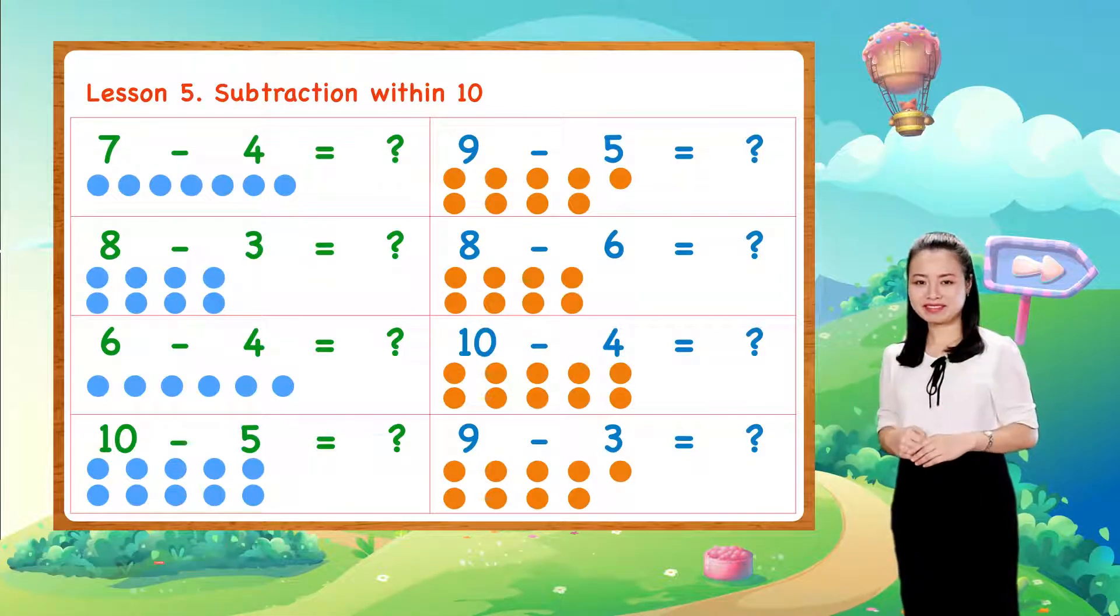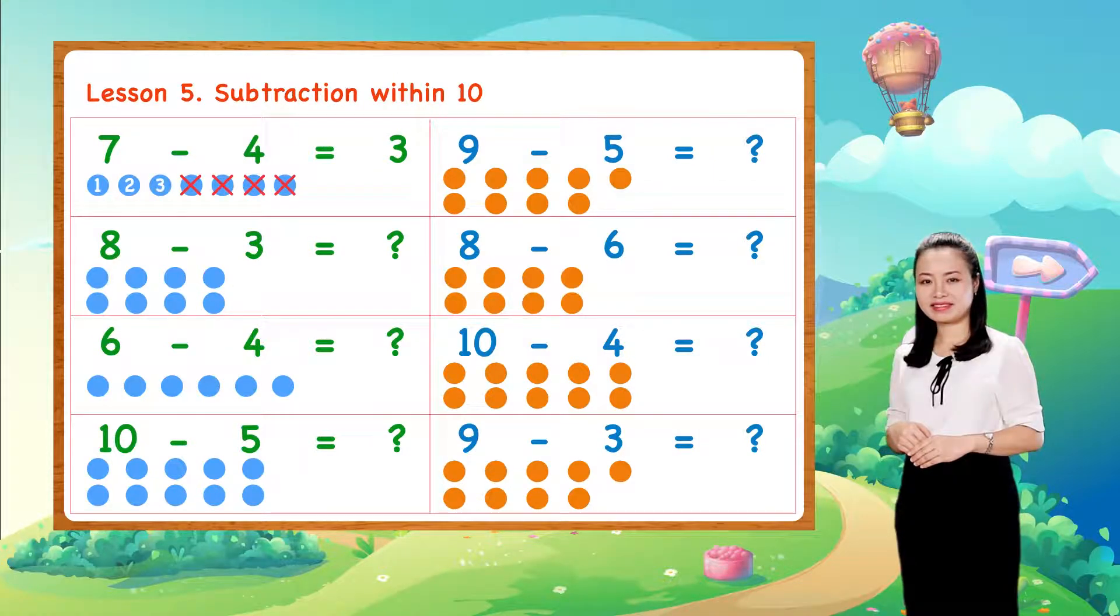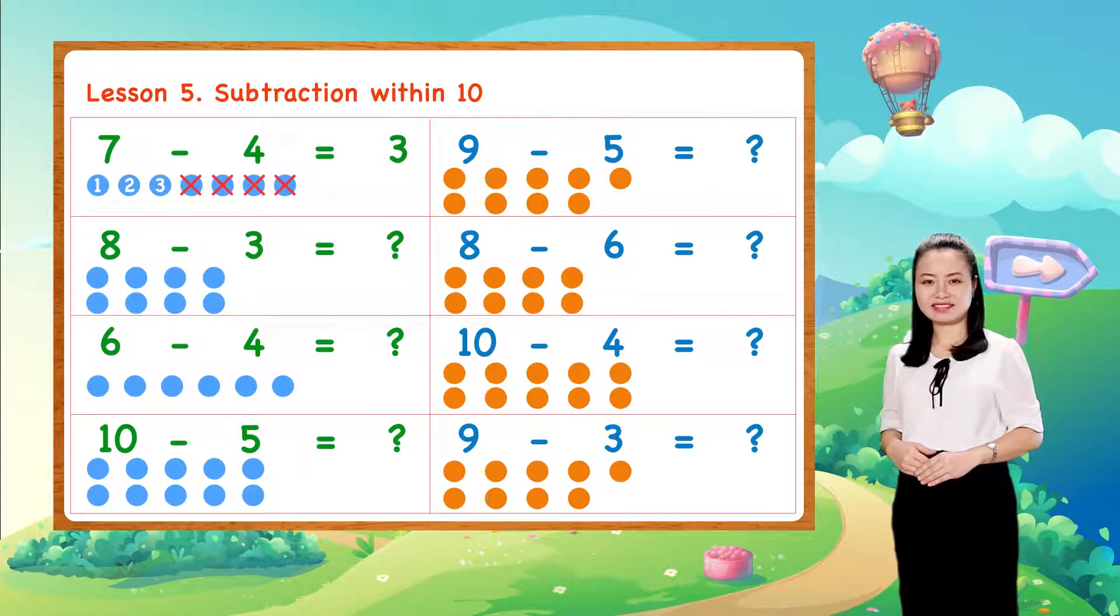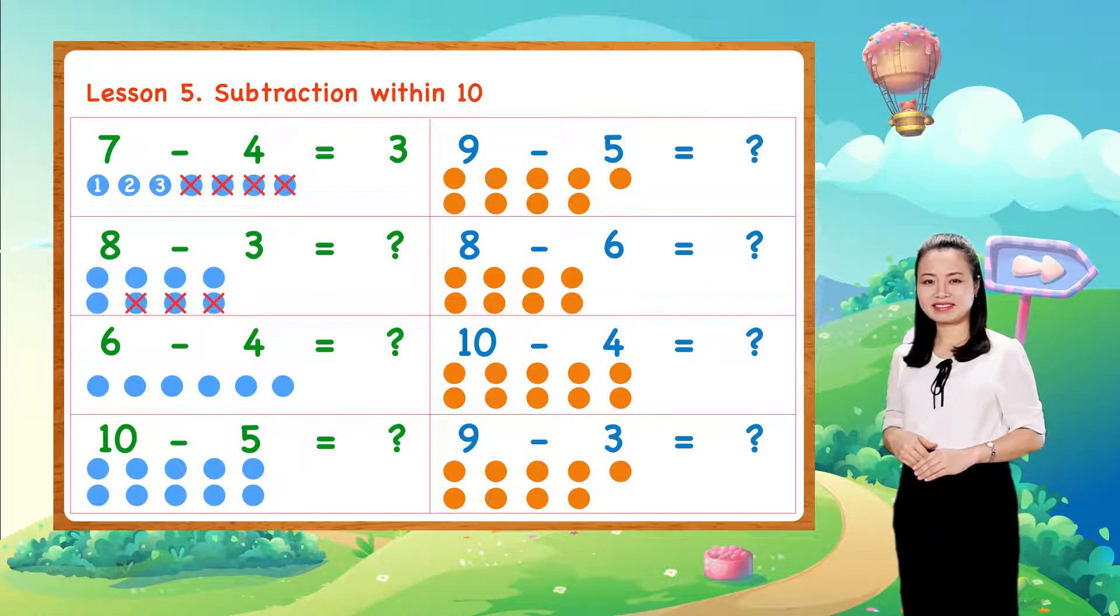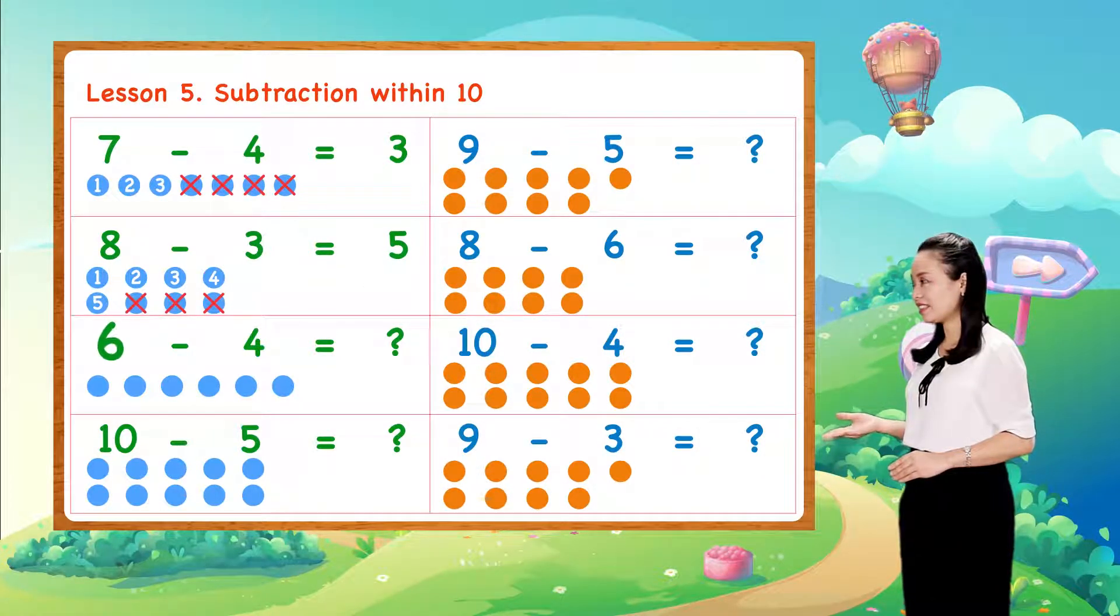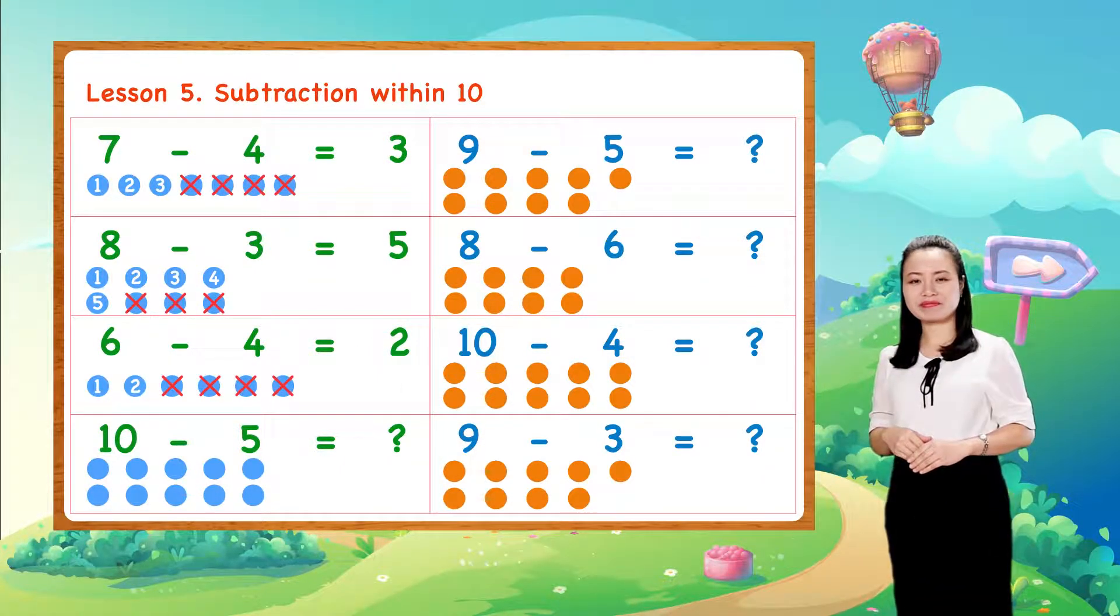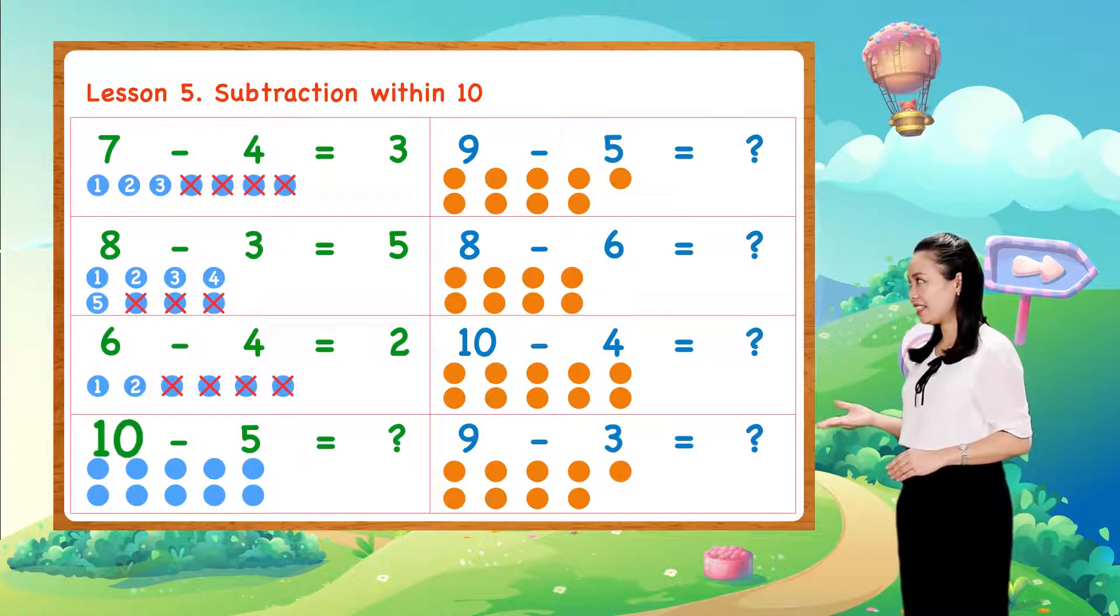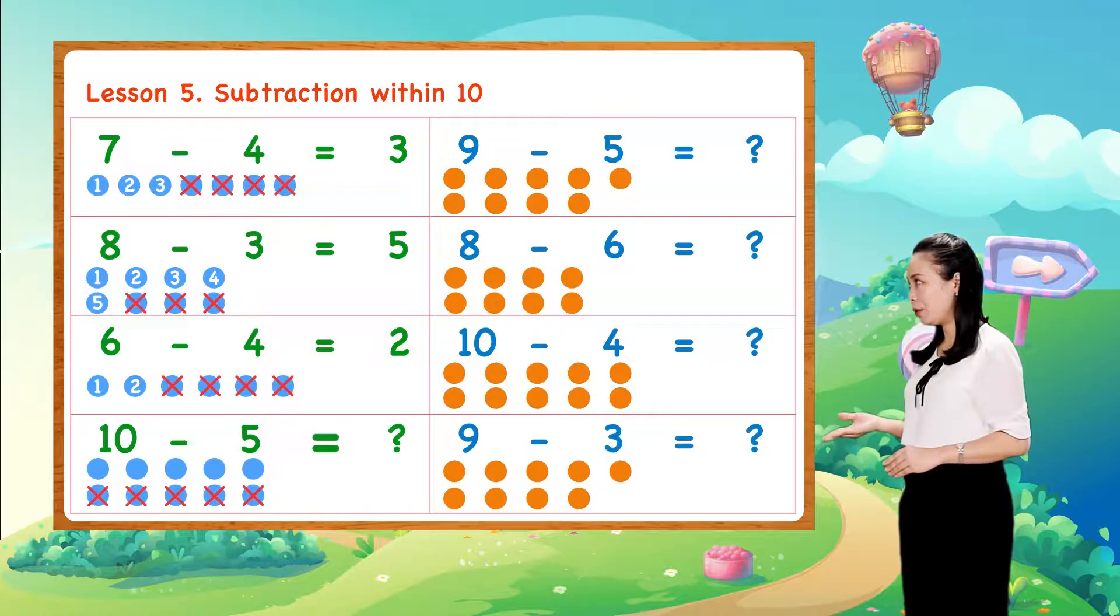So, 7 minus 4 equals 3. Next, 8 minus 3 equals 5, 6 minus 4 equals 2, 10 minus 5 equals 5.